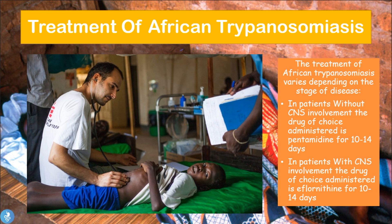Finally, treatment of African trypanosomiasis varies depending on the stage of the disease. In patients without central nervous system involvement, the drug of choice is pentamidine, administered for 10 to 14 days. In patients with central nervous system involvement, the drug of choice is eflornithine, also given for 10 to 14 days. Both are anti-parasitic agents effective in killing the parasite.